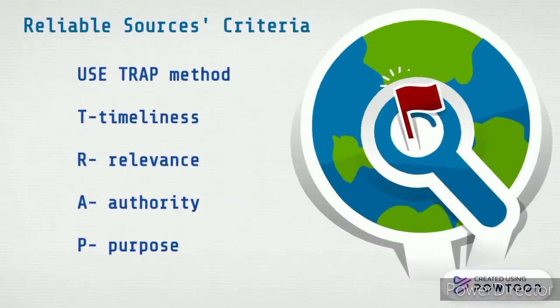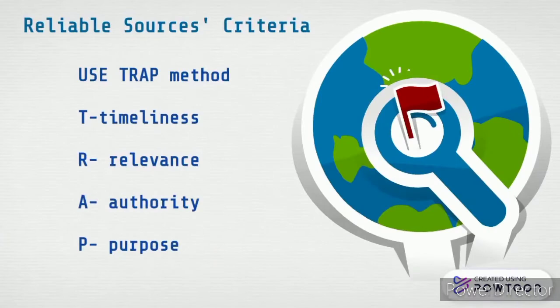The TRAP method is a useful way to remember the criteria. TRAP stands for T for Timeliness, R for Relevance, A for Authority, and P for Purpose.